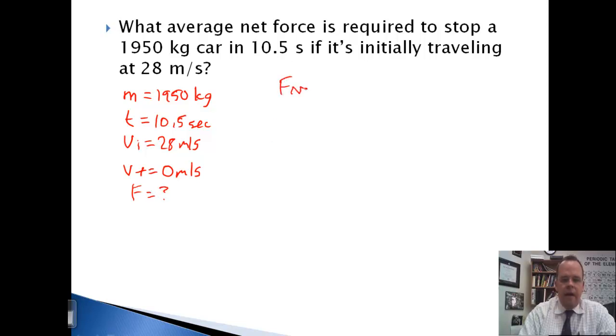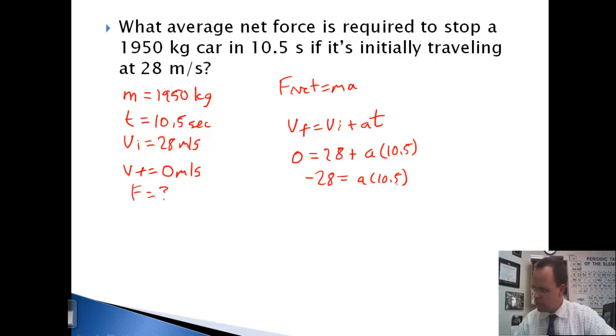To do this, I know F net equals MA. So I need A to find A. I'm going to use V final equals V initial plus AT. 0 equals 28 plus A times 10.5. So negative 28 equals A times 10.5, which means A comes out to negative 2.67 meters per second squared. And that should be negative because it's slowing the object down.